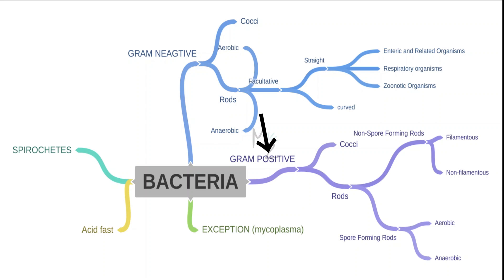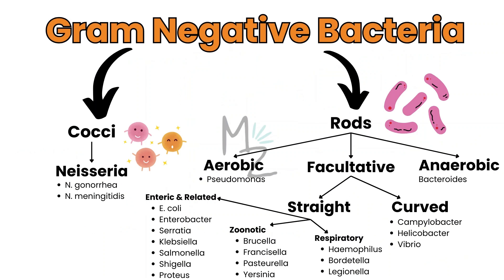Bacteria are also classified based on gram staining into gram positive and gram negative. Gram negatives are further subdivided into cocci like Neisseria gonorrhoeae and Neisseria meningitidis, and rods which are further subdivided into aerobic like Pseudomonas, anaerobic like Bacteroides, and facultative.